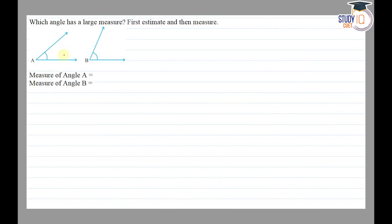Hello everyone. This question appears in the 'Lines and Angles' chapter of Understanding Elementary Shapes. This is the fifth question of Exercise 5.4. The question says: which angle has a larger measure? First estimate, and then measure.